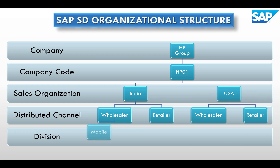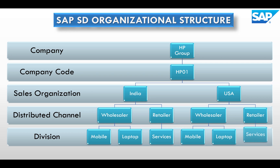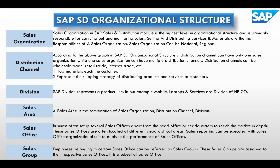Distribution channel can be wholesaler, retailer, or trader. One sales organization can have multiple distribution channels. Division represents the product line — for an electronics company it may be a mobile division, laptop division, or service division. We can have multiple divisions under distribution channels, depending on how the company is utilizing its organization structure to perform business transactions.